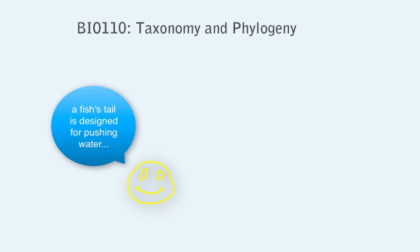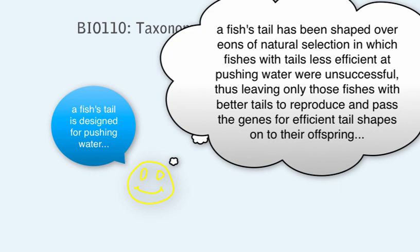What this is really is just a sloppy shortcut for a longer explanation that goes more like this. A fish's tail has been shaped by natural selection over thousands of generations in which fishes with tails less efficient at pushing water tended to be unsuccessful, thus leaving only those fishes with better tails to reproduce and pass the genes for efficient tail shapes onto their offspring.